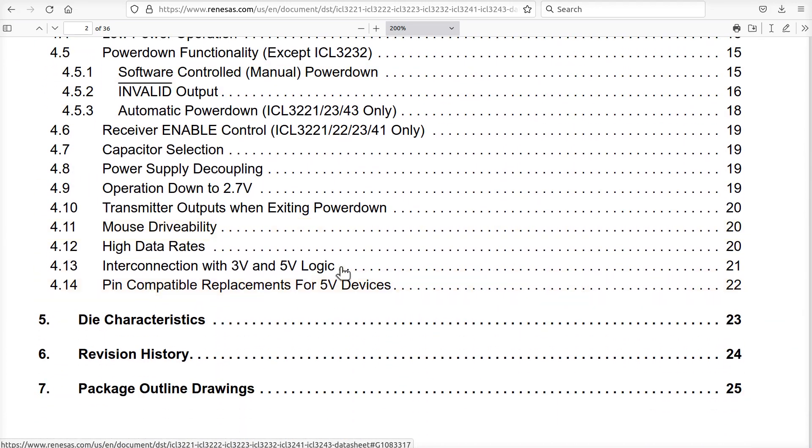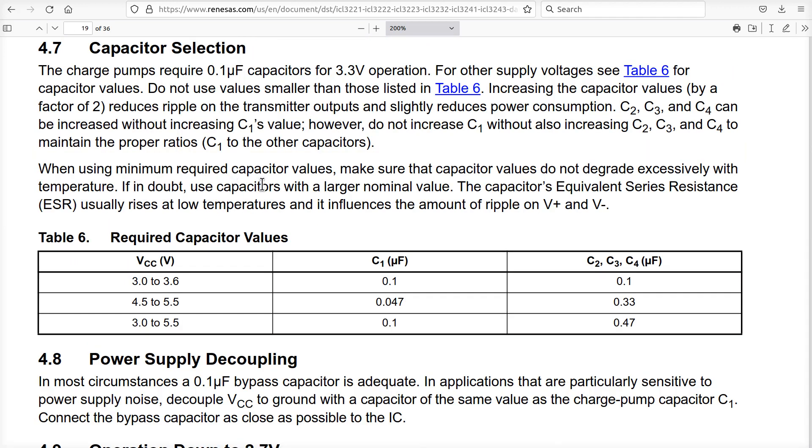Interconnection, pin compatible, power supply, capacitor selection right here on page 19, it says something that I didn't notice. Maybe I read this years ago when I stocked these and kind of got used to it. Four of them for the 3.3 volts, right? So your VCC is 3.0 to 3.6. Go ahead and use 0.1, 0.1 for everybody.